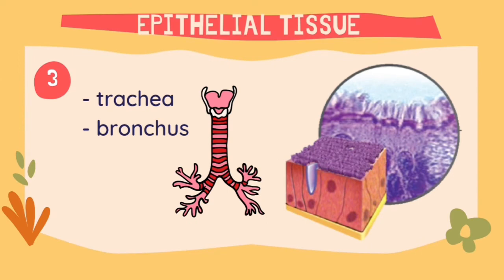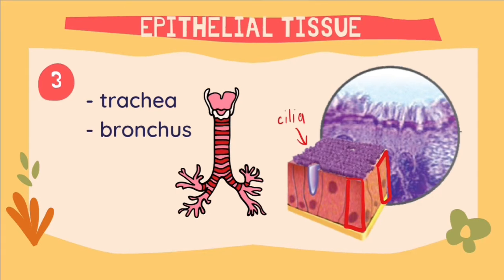The next structure has a rather rectangular shape compared to the structures before this. Other than that, it has a hair-like structure on the top surface known as cilia. This structure of the epithelial tissue can commonly be found in the trachea and the bronchus, which are both structures of the lung.